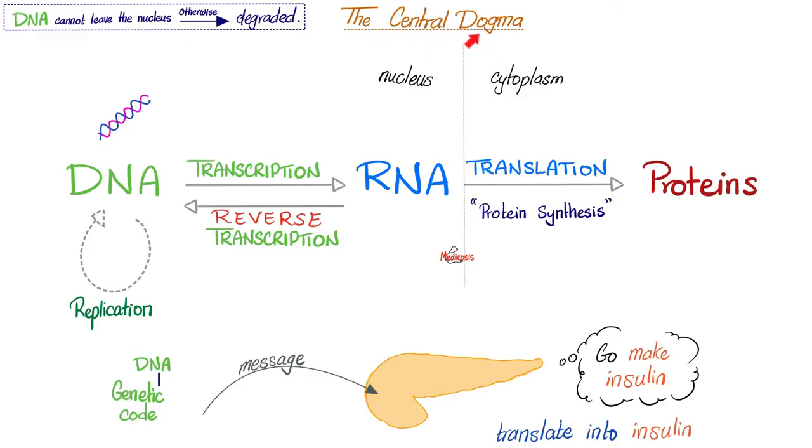You shall never forget the central dogma of the genetic code. DNA to RNA, transcription. RNA to proteins is translation. Translation is synonymous with protein synthesis. The first step happens in the nucleus, the second step in the cytoplasm.